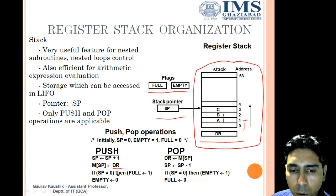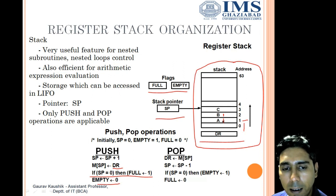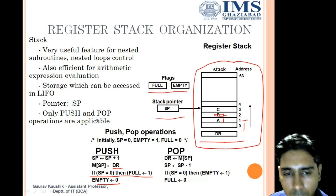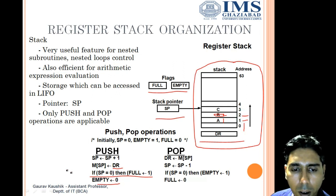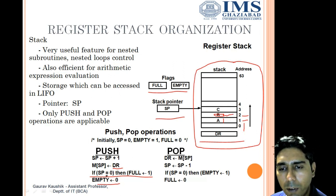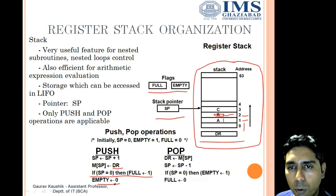After inserting 'a', we check if SP equals 0 — it does not, SP is at position 1 — so full remains 0. Then empty becomes 0, since at least one element is now in the stack. For the next push, suppose we insert 'b': SP becomes 1 + 1 = 2, and b is copied at the second position. The condition SP = 0 is again checked — no — so full is not set and empty remains 0.